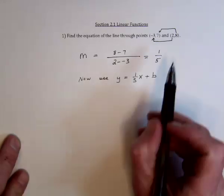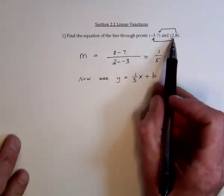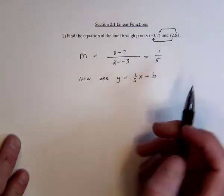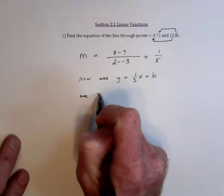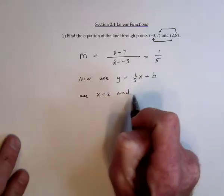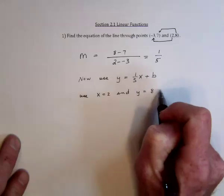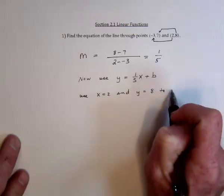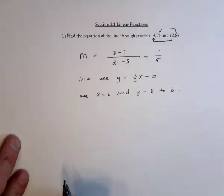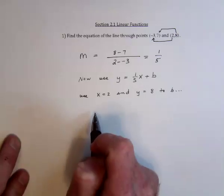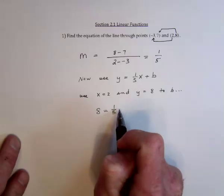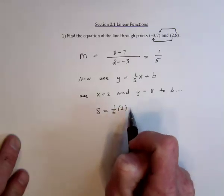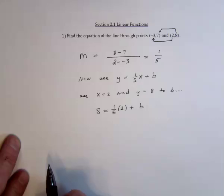To do that just pick a pair of points, 2 comma 8 will work. Substitute that x is 2 and y is 8 to find out what the b is. So in this equation, the left-hand side will be an 8, 1 fifth times the x value of 2, and then we need to solve for b.